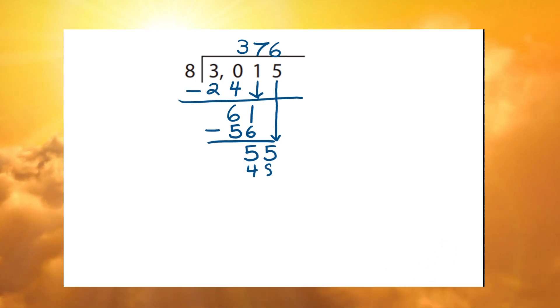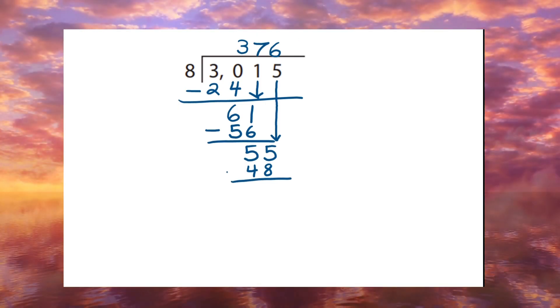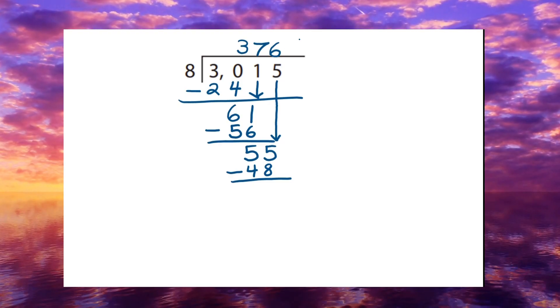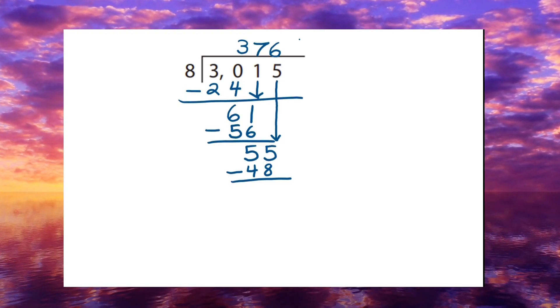And now, that we have lined forty-eight below fifty-five, we can do the subtraction. And we come up with a difference. A difference of seven.